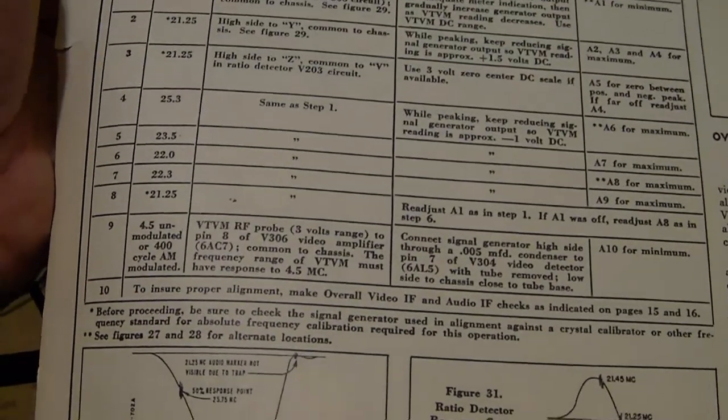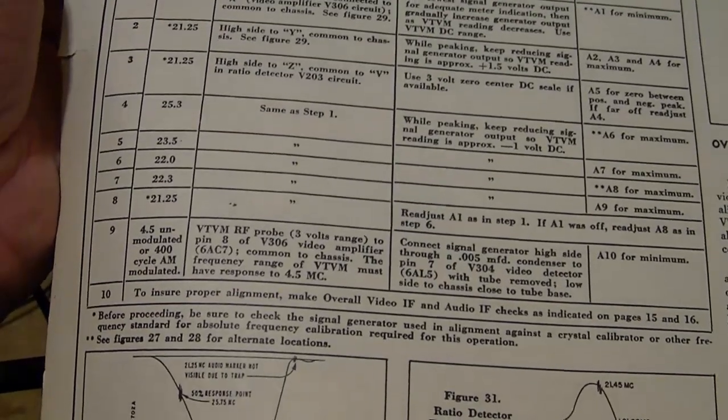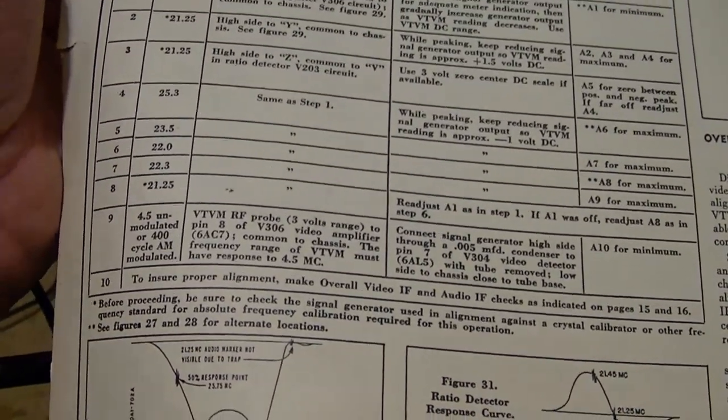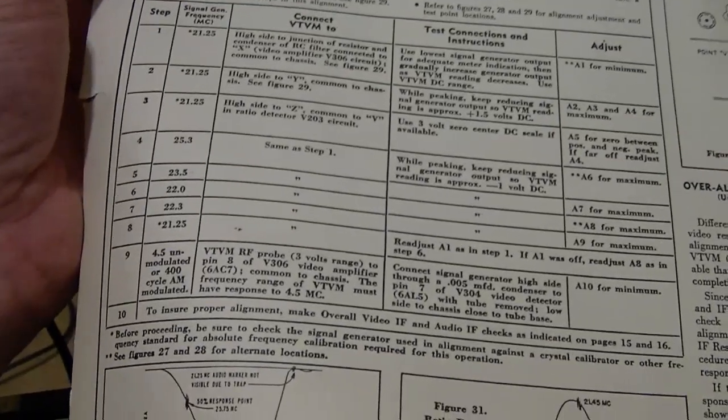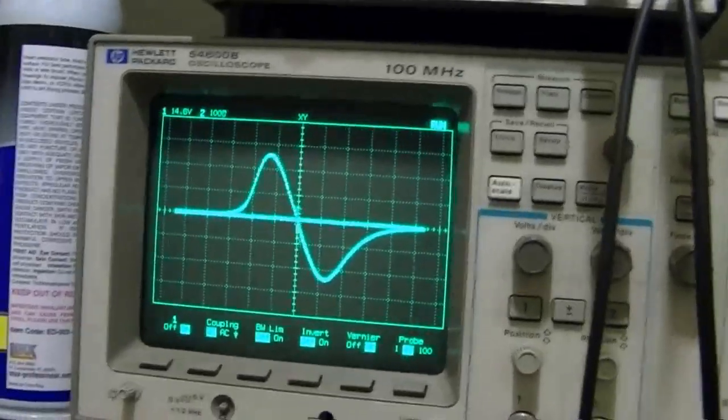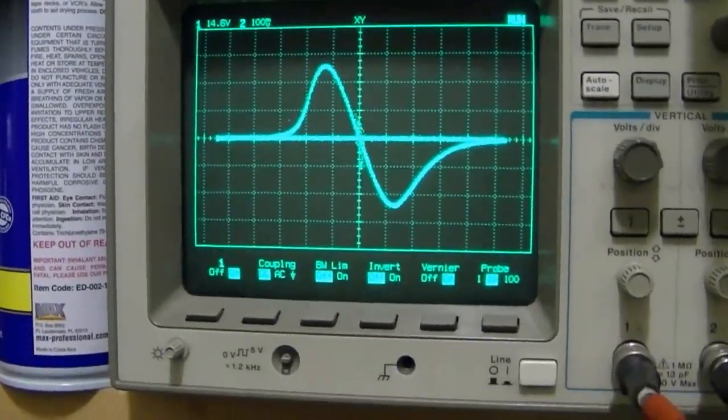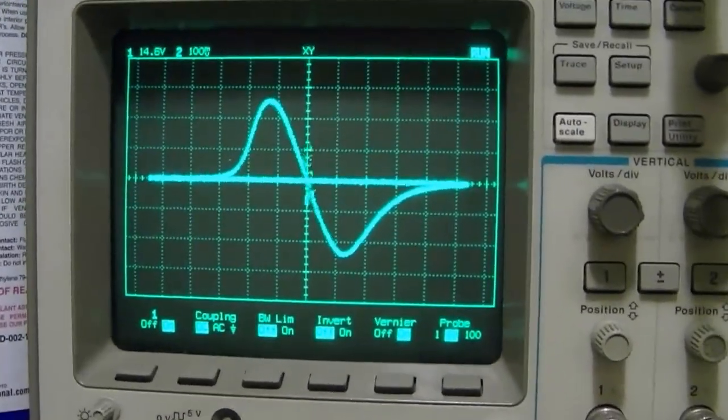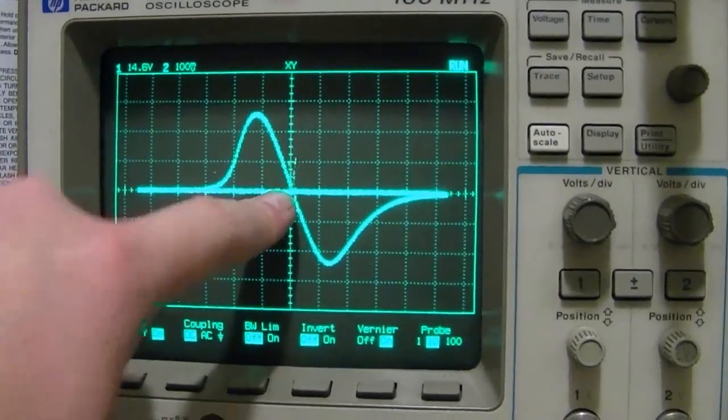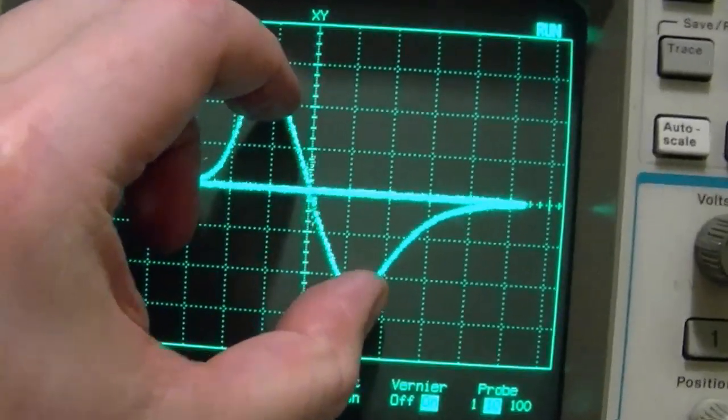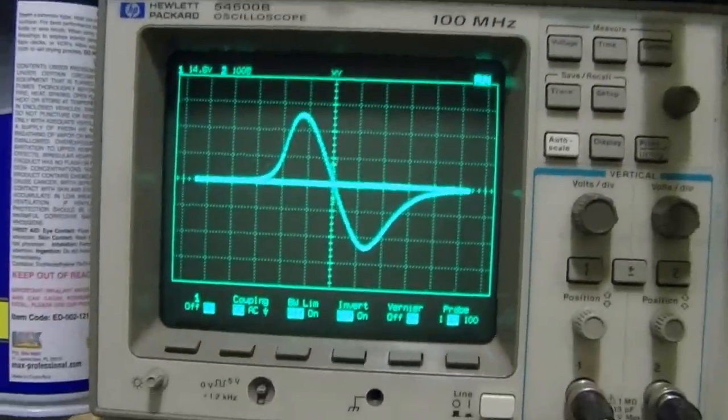I finished going through the rest of the video IF coils and several others were off considerably as well so now I'm really curious to see what impact it's going to have. But before I do that I hooked up a sweep generator so I could double check the FM sound alignment. Here is my S curve and it's pretty good. There's a crossover at 2125 and it's pretty symmetrical on either side of that. So I think that is just fine.